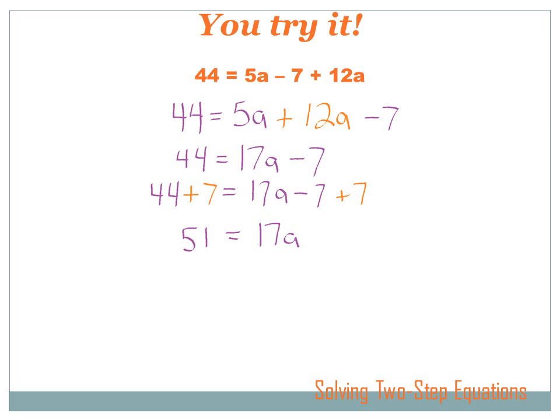So now I've got 44 equals 5a plus 12a minus 7. And I can combine that 5a and that 12a and I get 17a. And I still got my minus 7 and the 44 hasn't changed. Well, now I've got 17a minus 7. That's a two-step equation.